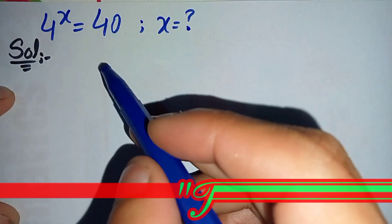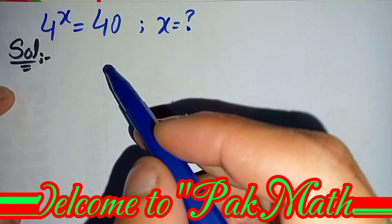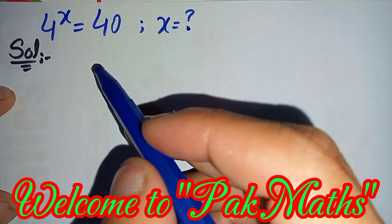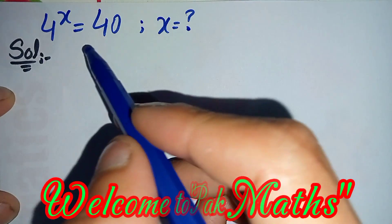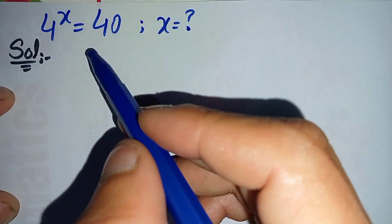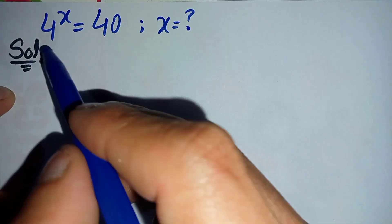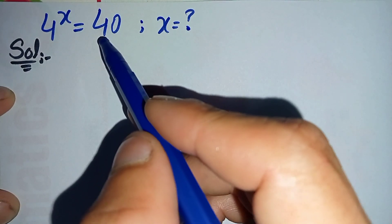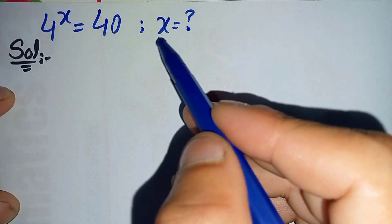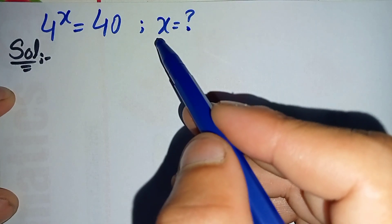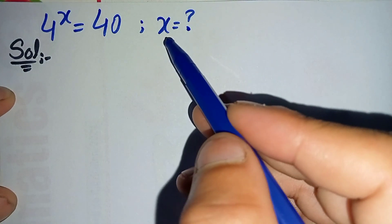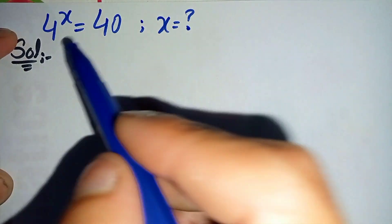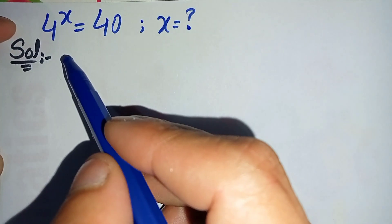Hello everyone, welcome to Park Maths. In this video I'm going to solve this simple but interesting exponential equation, which is 4 raised to power x is equal to 40. We will try to find the value of x using two different methods.